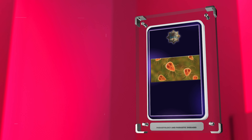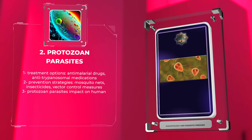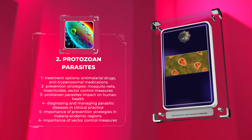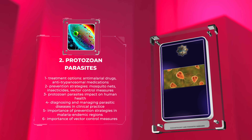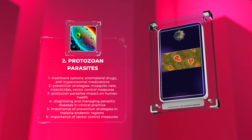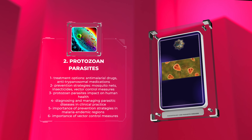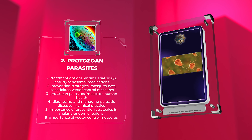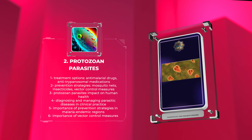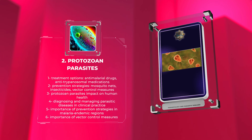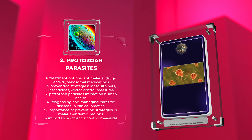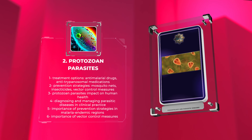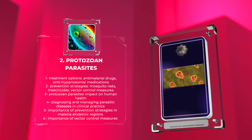The specific terminologies associated with parasitic life cycles will be discussed in detail. Furthermore, we will explore the various treatment options available for these protozoan infections, including antimalarial drugs and antitrypanosomal medications. The importance of prevention strategies, such as mosquito nets and insecticides in malaria endemic regions, and vector control measures for sleeping sickness will also be emphasized. By the end of this section, you will have a thorough understanding of protozoan parasites and their impact on human health, knowledge invaluable in diagnosing and managing these parasitic diseases in clinical practice.